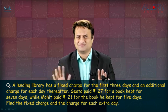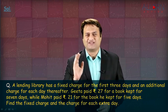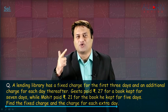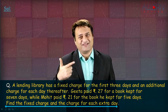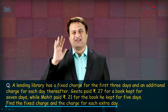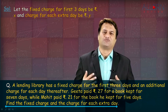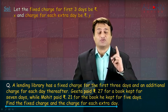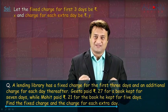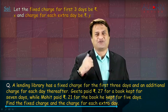Confusion? It is not — it is a very simple sum. Let us go step by step. Read the last statement: find the fixed charge and the charge for each extra day. There are two unknowns — a very basic straightforward sum. Let the fixed charge be Rs. X for the first 3 days, and let the charge for each extra day be Rs. Y. So, X is the fixed charge for the first 3 days and for each extra day the charge is Rs. Y.